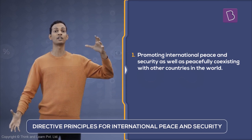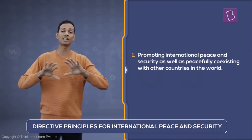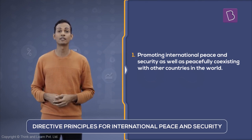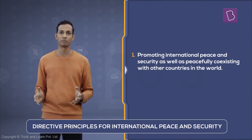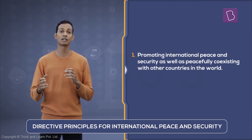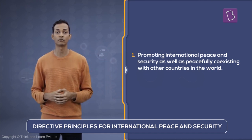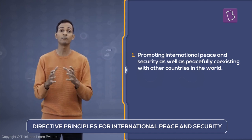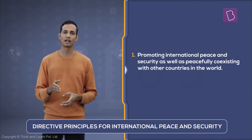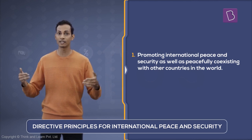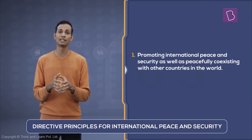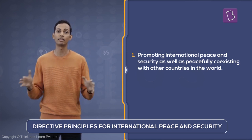India is a vast country and it interacts with many other countries in the world. Switch on the television or open any newspaper — you would always find news discussing what is happening in different parts of the world, or some news about the leaders of two countries quarrelling. As a country connected to all these different countries, it becomes important for India to maintain a peaceful relationship with them.